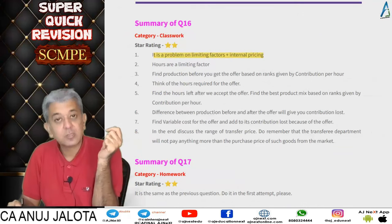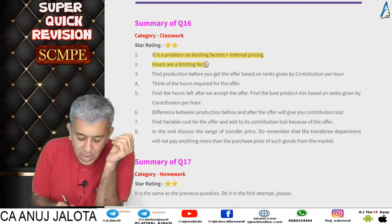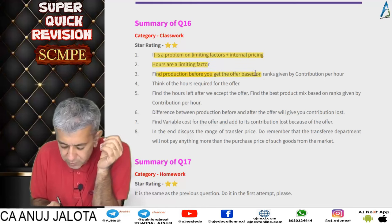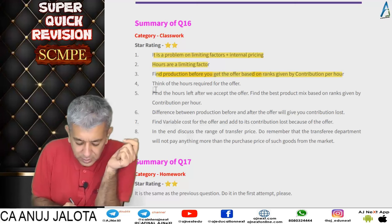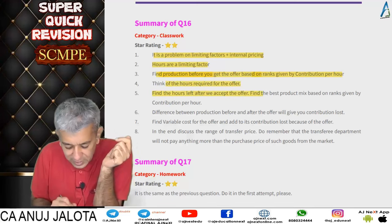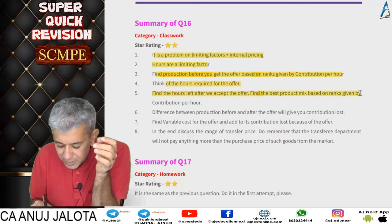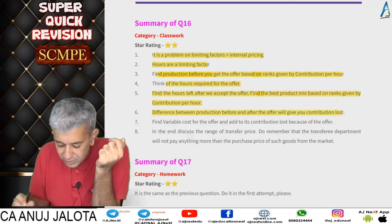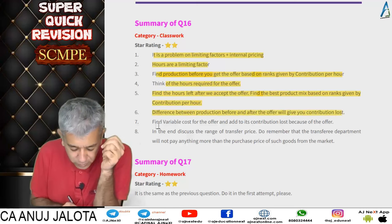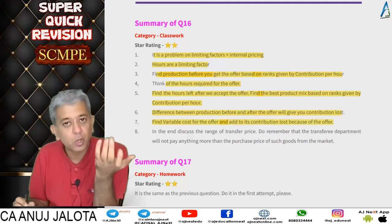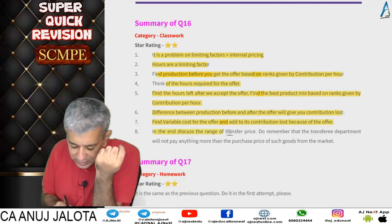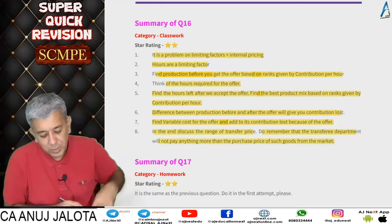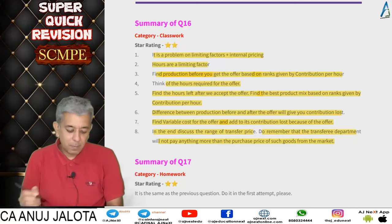Question 16 summary: it's a problem combining limiting factors and internal pricing. Hours are the limiting factor. Find production before the offer using contribution per hour rankings. Calculate hours required for the offer. Find hours remaining if offer is accepted. Find the new best product mix. The difference in production gives the contribution lost — this is the opportunity cost. Add variable cost and opportunity cost for minimum transfer price. Remember: the transferee department will not pay more than the market purchase price.